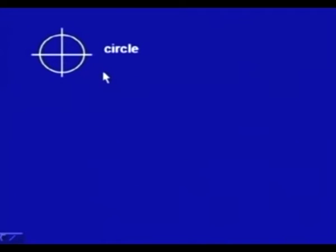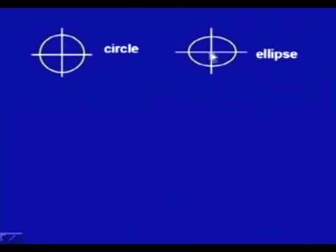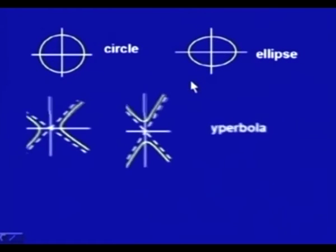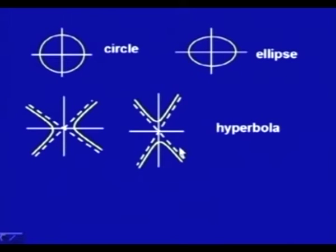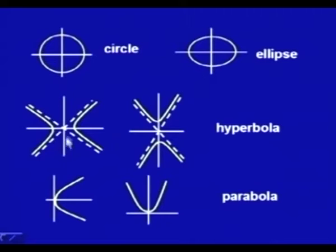This is a circle, and we all are aware of this. An ellipse has major and minor axes that are different. The hyperbola is shown with its asymptotes as yellow curves. In the case of a parabola, it may open in various directions.